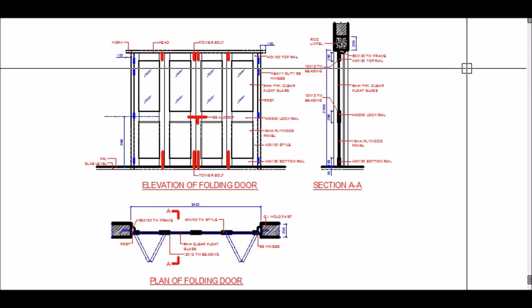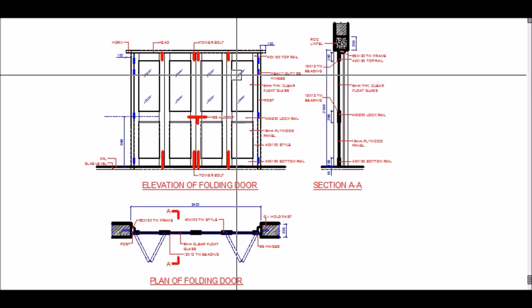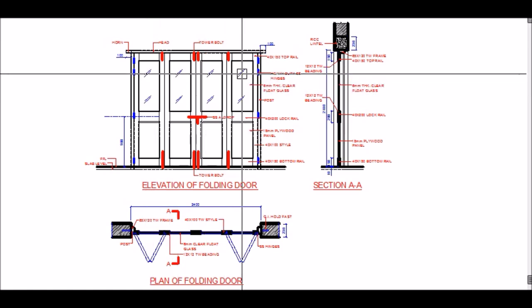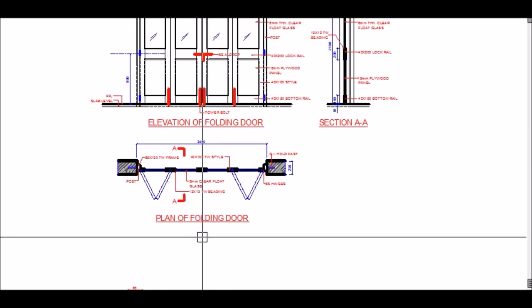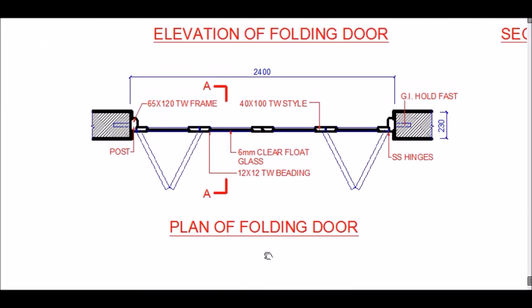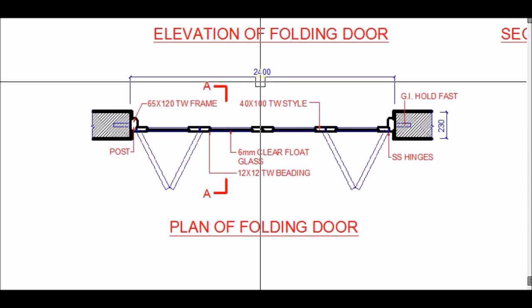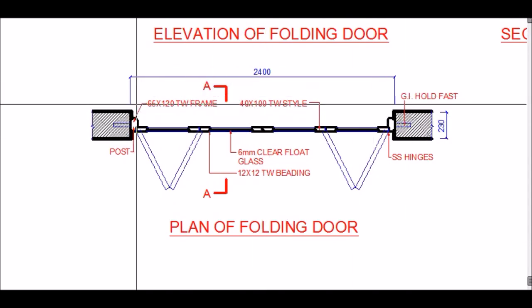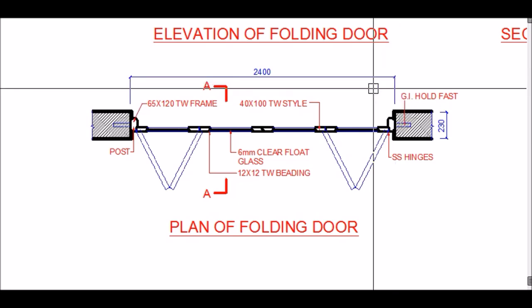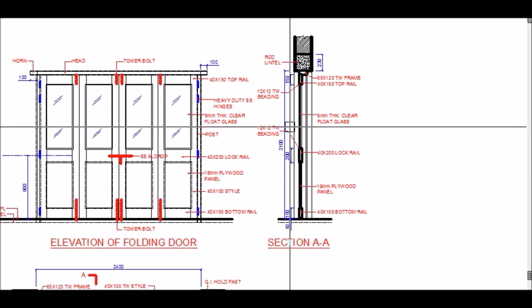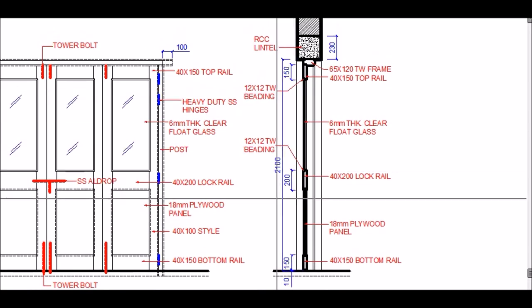Hello friends and welcome to another video lecture from Architects Academy. Today we are going to learn about a teakwood folding door consisting of four leaves or four shutters. Looking at the plan, this door has a total width of 2.4 meters and a height of 2.1 meters as seen in the section.